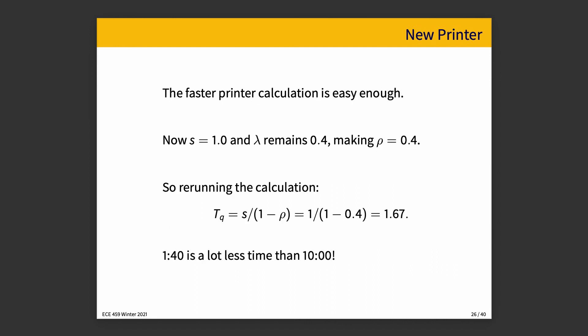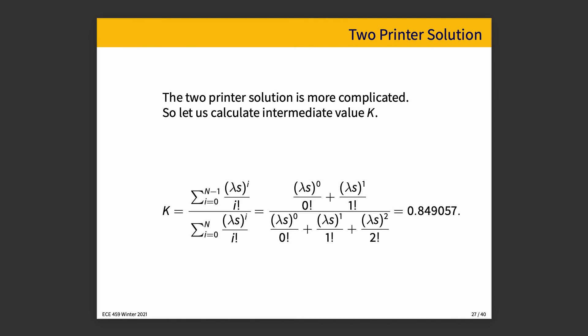All right, let's do the math. New calculation. So now, because this printer we said is double the speed, the service time is 1.0, so one minute, and lambda is still 0.4, one job every two and a half minutes on average. So rerunning our TQ calculation, we end up with S divided by 1 minus rho is now equal to 1 divided by 0.6, or 1.67. Putting that in minutes terms, that makes it 1 minute and 40 seconds, which, as you might imagine, is a lot less time than 10 minutes. Okay, that's a huge improvement. That sounds pretty good. But is it the best option, though? We have to do the other one.